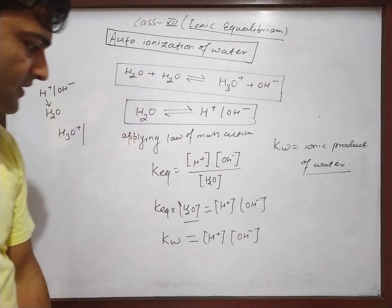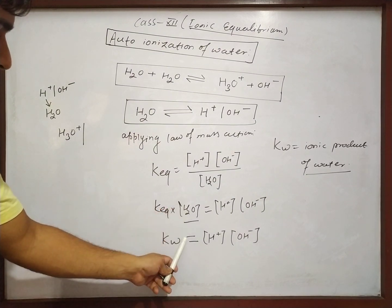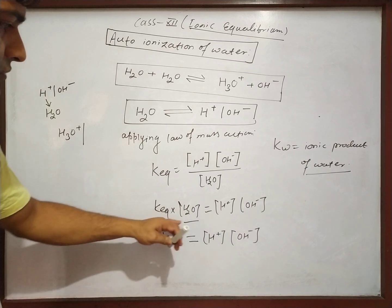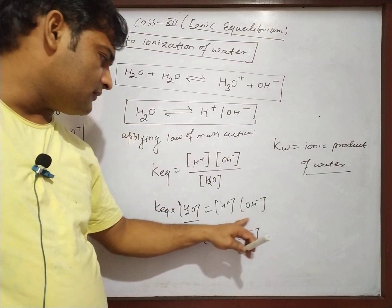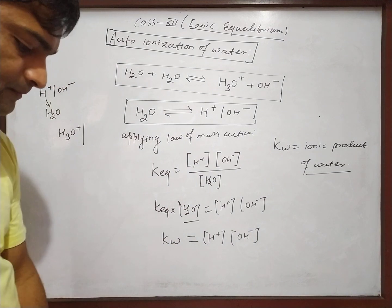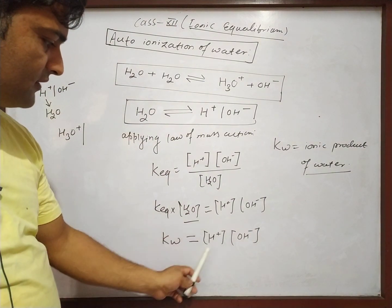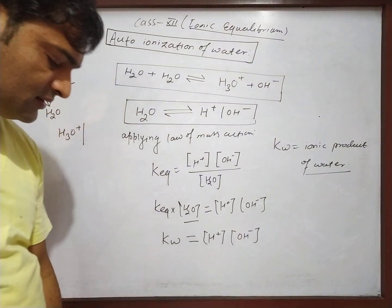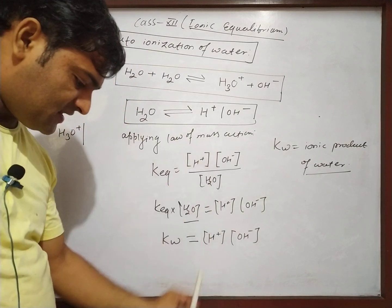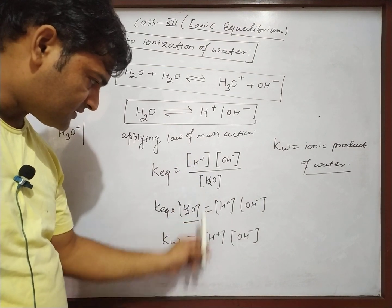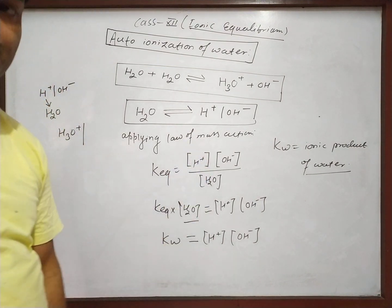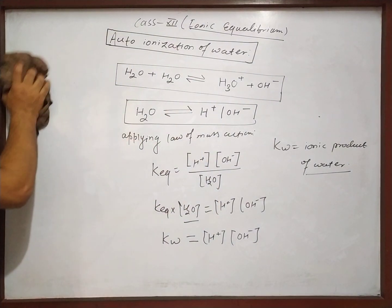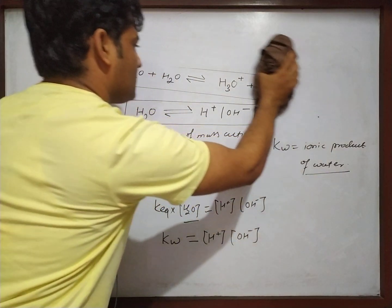At a particular — fixed — temperature, whether 25, 35, 45, or 10 degrees, the number of water molecules is fixed. Its value at a particular temperature remains constant. When temperature changes, the concentration changes. The number of ions is determined by the auto ionization of water.